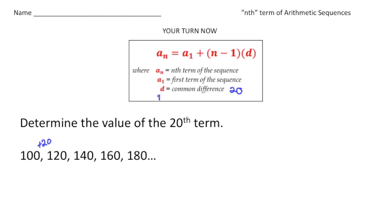I'm going to write 20 over here, and we want to know what the 20th term is going to be. So our n value is going to be 20. Our first term is 100. Let's plug in the values into the formula. a sub n is going to equal - again, our first term is 100 - plus...